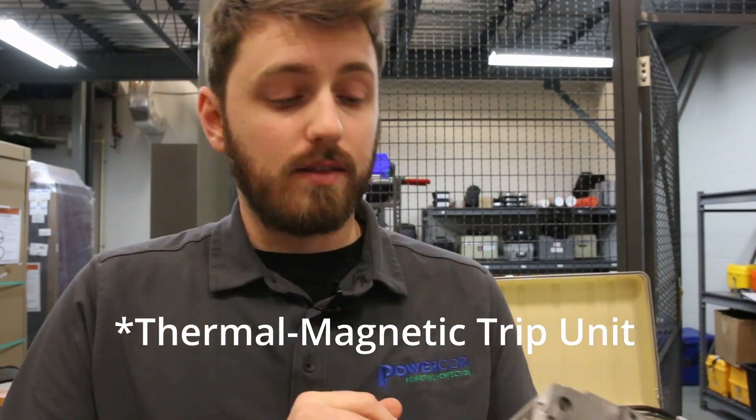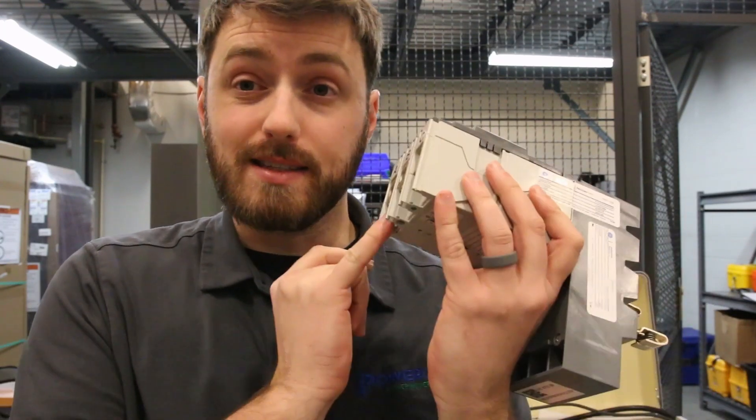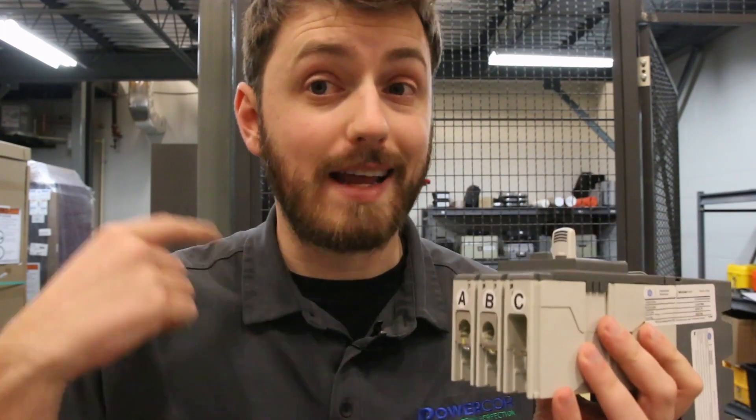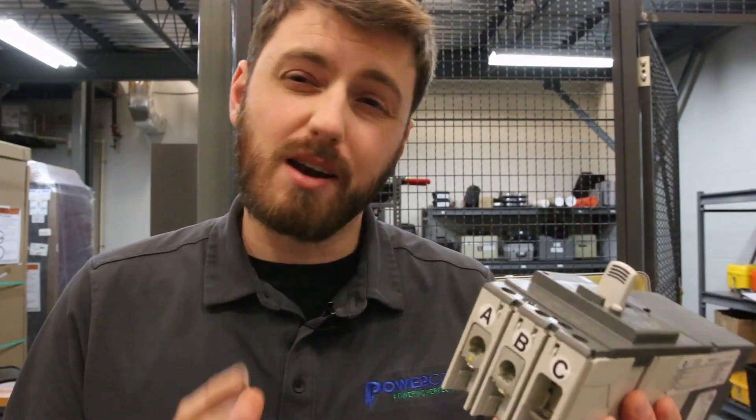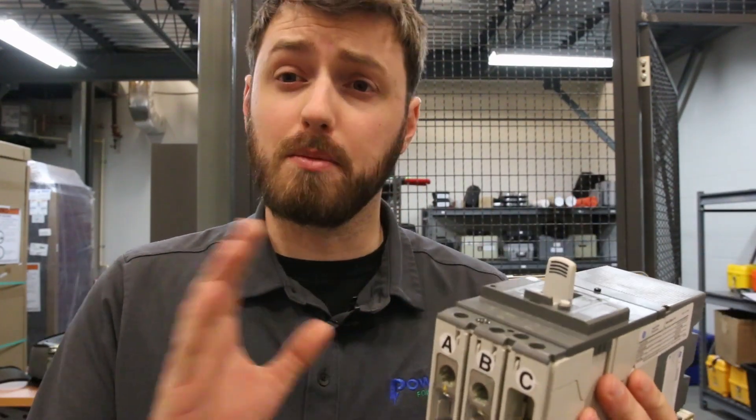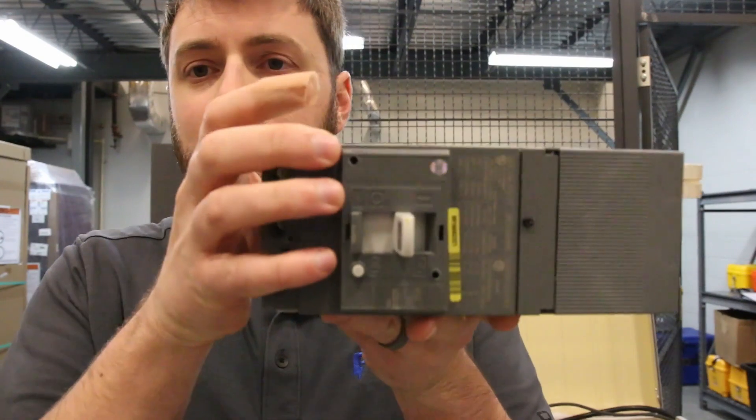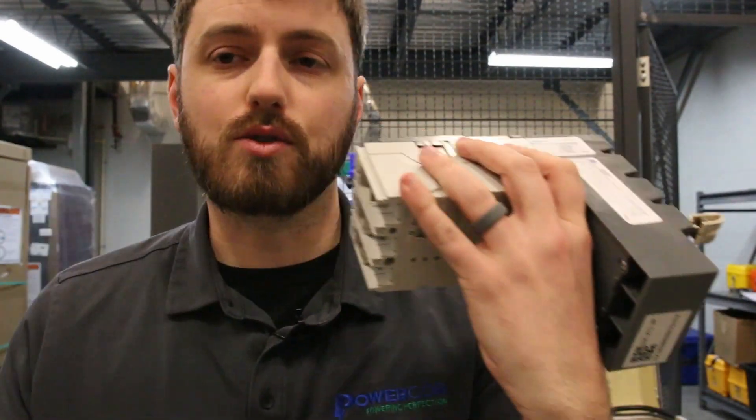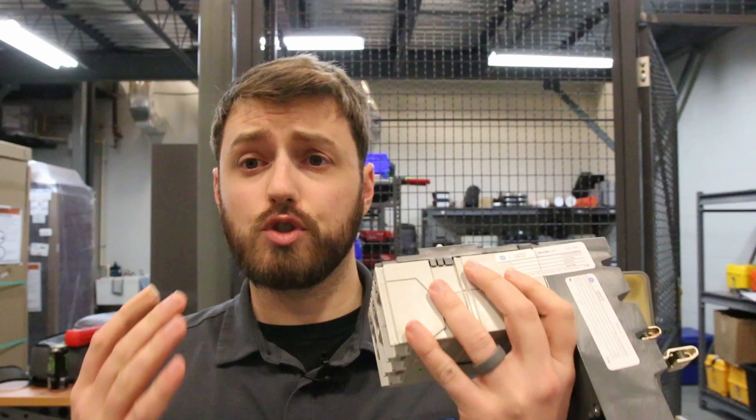It takes a while for the heat to transfer from that lug through the breaker to the trip unit, get the trip unit hot enough to trip. So I think the issue starts from these lugs not being very tight. Now, what's the next logical thought? Oh, well, the lugs need to be torqued. They have torque seal on them, and I'm 90% sure that that torque seal was applied at the factory, given the fact that it was covered by a plastic cover. You can't really see it, and then once it's mounted in the panel, you can't access the back screws to tighten that up anyway.